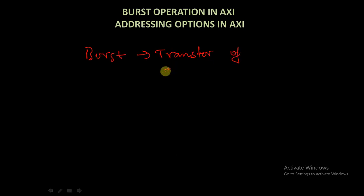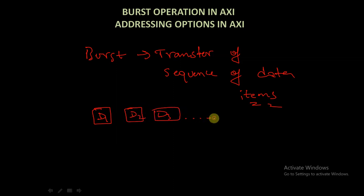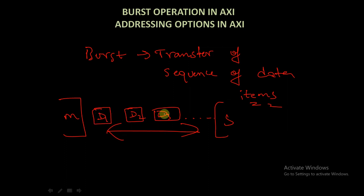The AXA protocol is a burst-based protocol which is designed to support high performance communication between different components in the system. A burst is nothing but a transfer of a sequence of data items between the master and the slave — data items D1, D2, D3, and so on — transferred sequentially between master and slave.